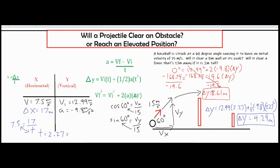An example of a direct solution: using VF = 0 at the peak allowed us to find delta y outright with the VF² and VI² formula. An example of an indirect solution: delta x of 17 meters let us find time, which we then plugged into the vertical column to find delta y. I hope that was helpful in understanding how to set up and solve a projectile problem involving clearing an obstacle or reaching an elevated position.